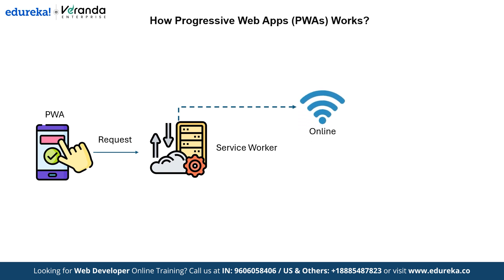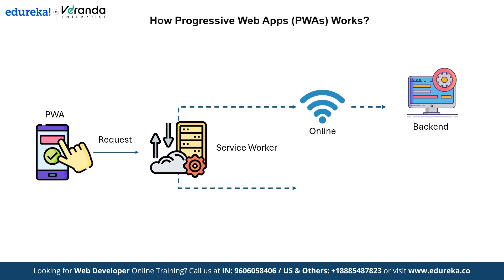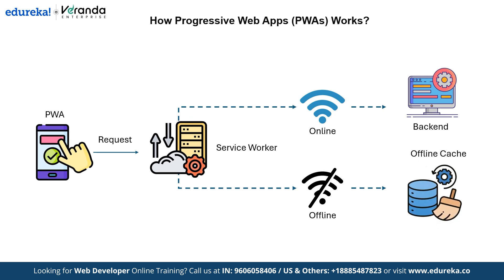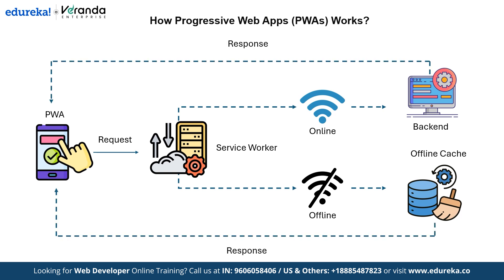If the user is connected to the internet, the service worker forwards the request to the backend server. The server processes the request and quickly returns the necessary data or content to the app. But what happens if the user is offline? This is where the service worker truly shines. Instead of letting the app fail, it retrieves the required data from the offline cache, ensuring that the app continues to function seamlessly even without an internet connection. Finally, regardless of whether the response comes from the backend or the cache, the service worker sends it back to the app, guaranteeing a smooth user experience no matter their connectivity status.